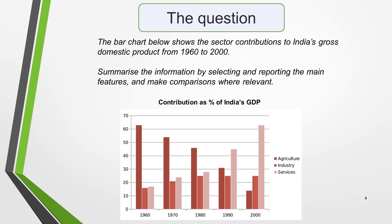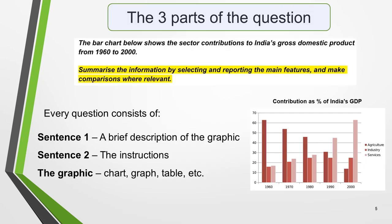Here's our practice question. The bar chart below shows the sector contributions to India's gross domestic product from 1960 to 2000. Summarise the information by selecting and reporting the main features, and make comparisons where relevant. Write at least 150 words. The format of every academic Task 1 question is the same — here's our practice question again, with the words that are included in all questions highlighted.